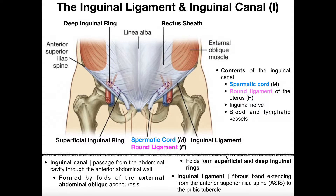Let's talk about the inguinal ligament first. This rope-like band of fibrous tissue is the inguinal ligament. Up here it connects to the anterior superior iliac spine, or ASIS, and then down here it connects to the pubic tubercle.